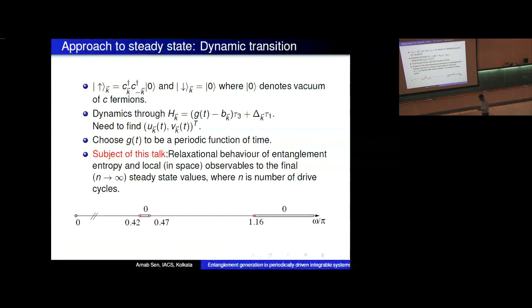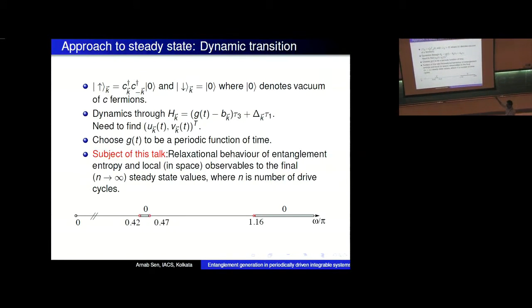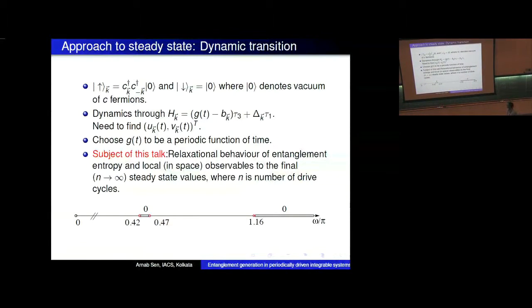At each k you just have to solve this two-by-two problem, and once you know the u, v which is just the amplitude of this guy and the amplitude of that guy at each k, you have information about all correlation functions at any finite time. So that's the scheme in which you can solve for these things.